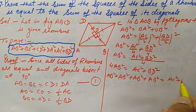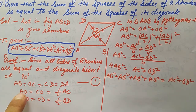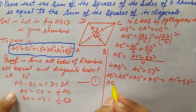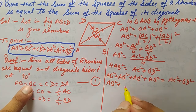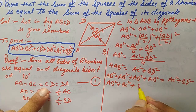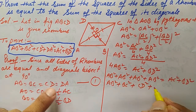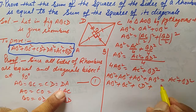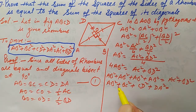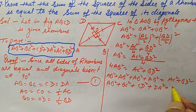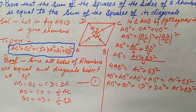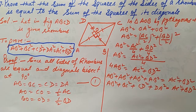Since all sides are equal, we can replace each AB with the corresponding side: AB² + BC² + CD² + DA² = AC² + BD². Hence the question is proved. It's a very simple question. Thanks for watching.